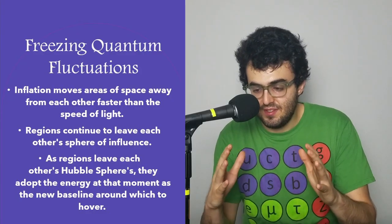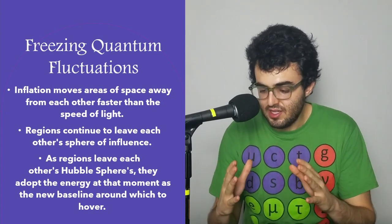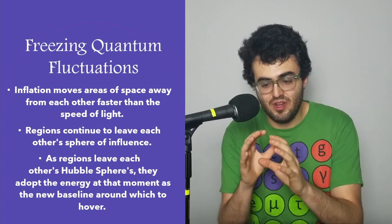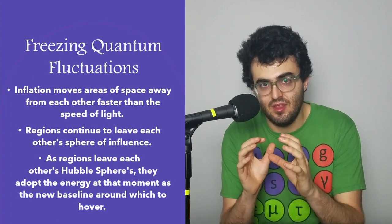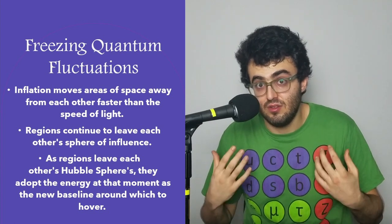The way inflation does that is that inflation moves areas of space away from each other at faster than the speed of light. And what happens when you do that is that over and over, more and more regions of space are not interacting with the regions that they were just interacting with.